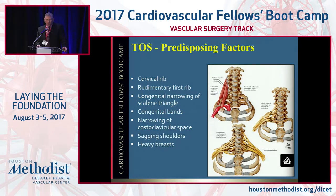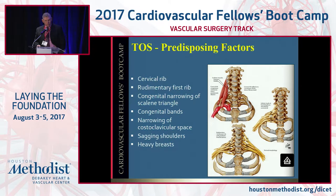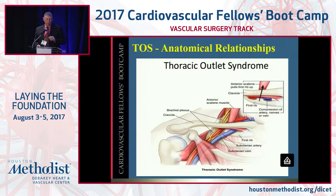Some of the predisposing factors include cervical rib, a rudimentary first rib, elongated transverse process, congenital bands, narrowing of the costal-clavicular space, sagging shoulders, or heavy breasts. All those people have come to my clinic with these problems over the last 25 years. This talks about how the three entities that run through the costal-clavicular triangle — vein, artery, and nerve — and where the compression occurs.